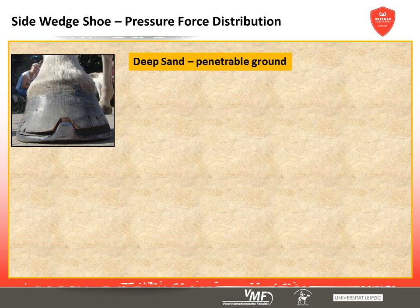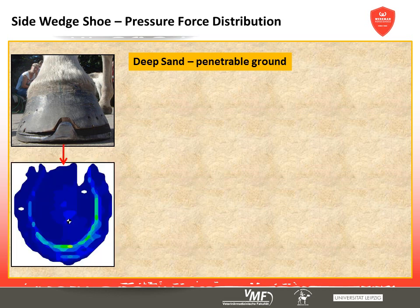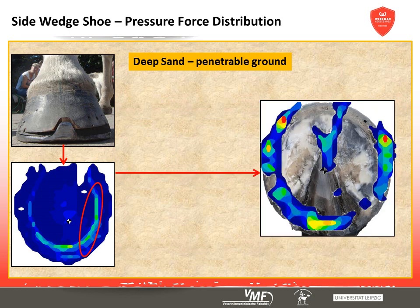Looking at the pressure distribution pattern on soft sand, the widened outer branch sinks deeper into the ground because of the increased pressure, generating increasing counter pressure so that the outer branch becomes clearly visible. This pressure is passed onto the hoof capsule so that an average of 10% more pressure weighs on the wedge side. Because the wedge additionally hinders sinking into the ground, the resulting ground reaction forces are accordingly high. Isolated wedges penetrate the ground easily and pressure forces on soft ground will presumably be smaller.